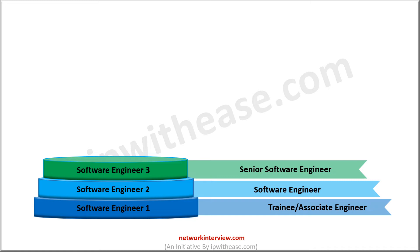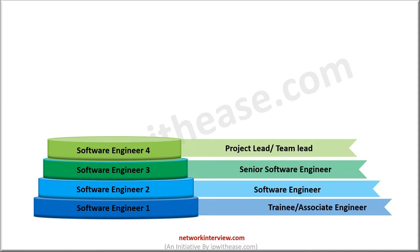After gaining enough experience, you will be promoted as Software Engineer 4. This equals the project lead or team lead position in other organizations. You will lead a team of individual software developers and programmers to create the new version or product of the company as per the project manager's needs. The average annual salary is $260,000 to $280,000.